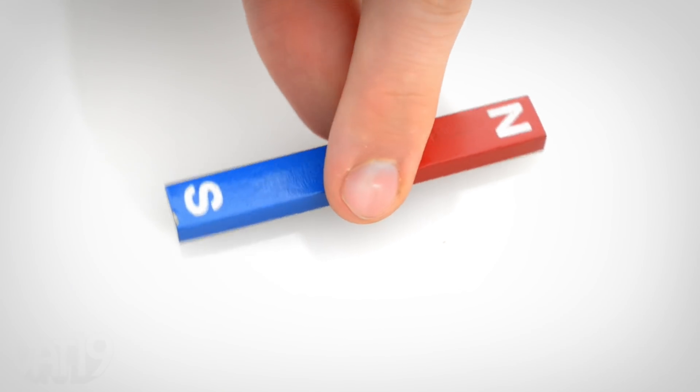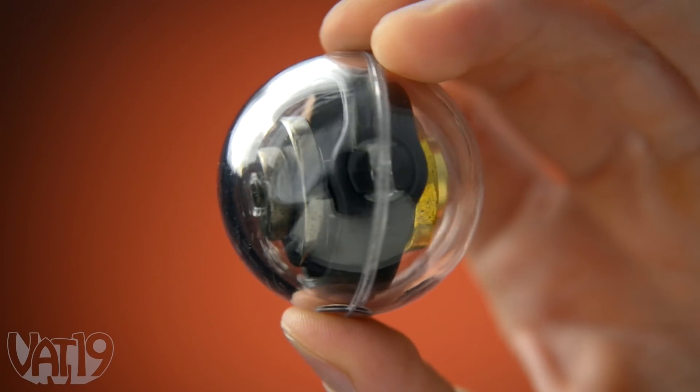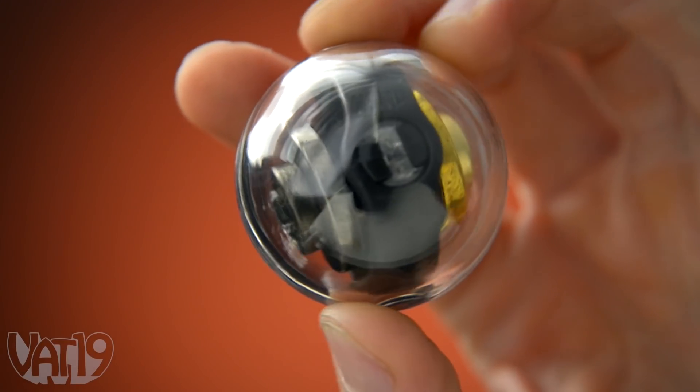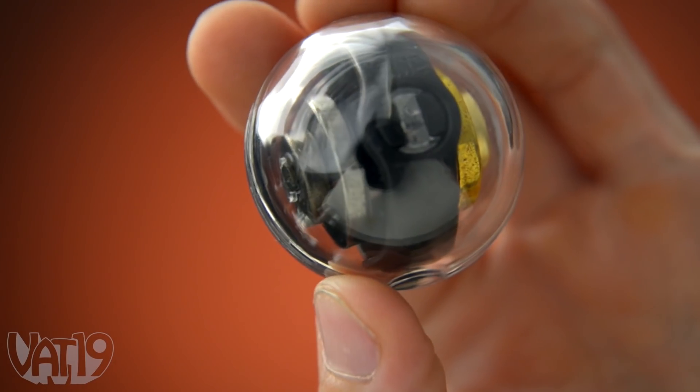Normal magnets have a fixed polarity that's stuck to the direction they're facing. But each orb contains a pair of gimbal-mounted rare earth magnets that grant 360 degrees of motion in each axis.